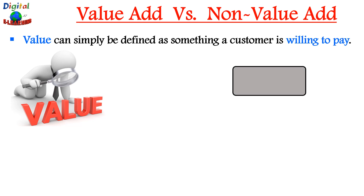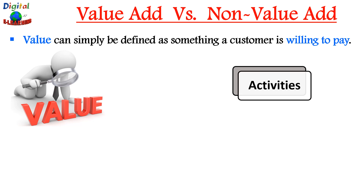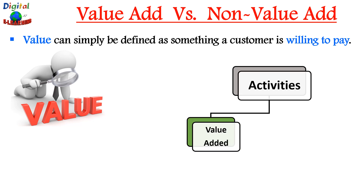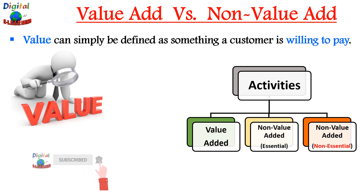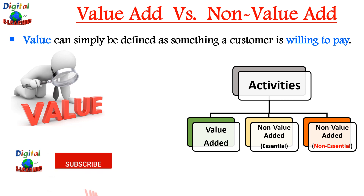We can categorize each step or activity that we do into three forms: one is value-added activities, second is non-value-added activities which are essential, and finally non-value-added activities which are not essential. We will look at each one of these one by one.